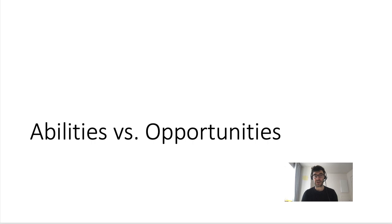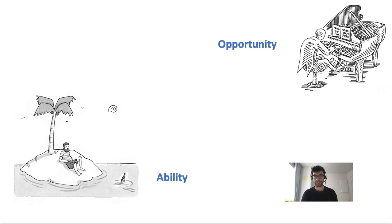To understand the argument, let's first review Franklin's distinction between abilities and opportunities. According to Franklin, a trained pianist who is stranded on a tiny island still has the ability to play the piano, because he has the skill and knowledge required to do so. But he still lacks something required for succeeding at playing the piano, namely access to a piano. And for this reason, Franklin says that the piano player lacks the opportunity to play the piano. So for Franklin, being able to do something in a strong sense requires both the ability and the opportunity to do it.